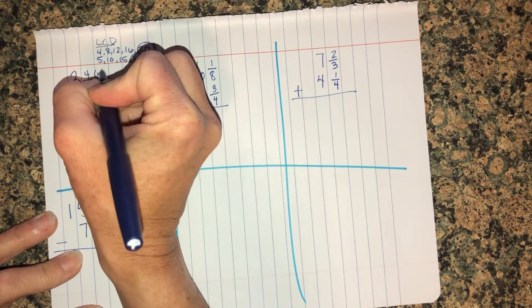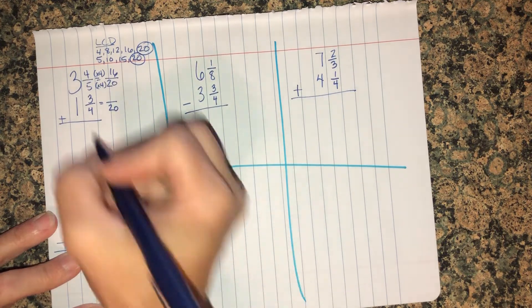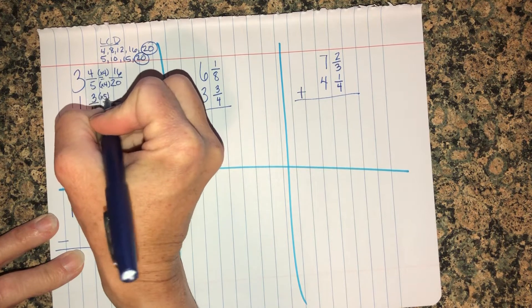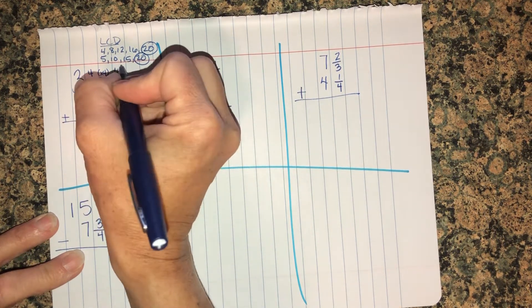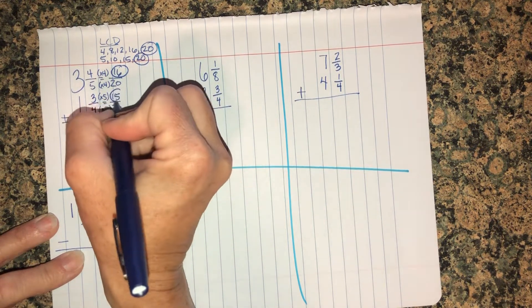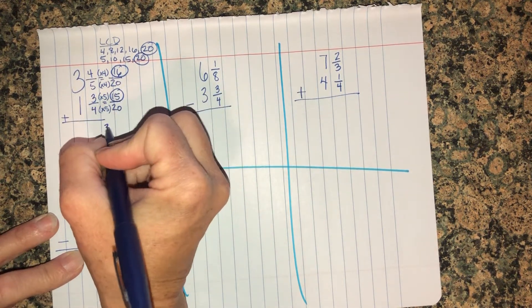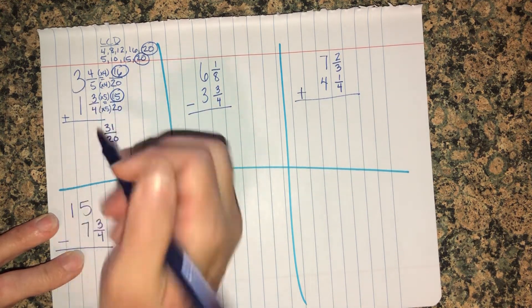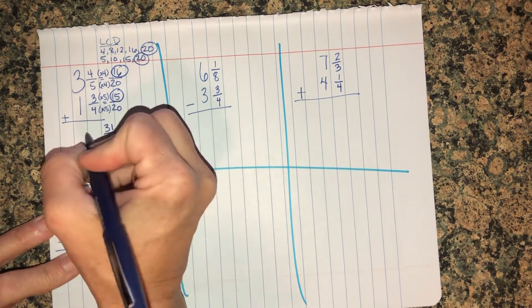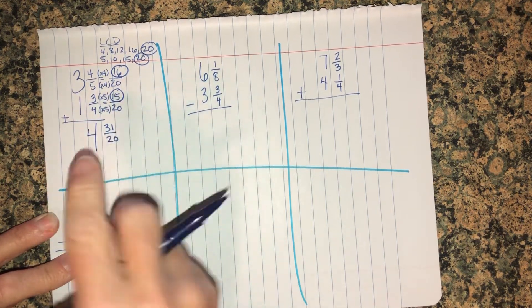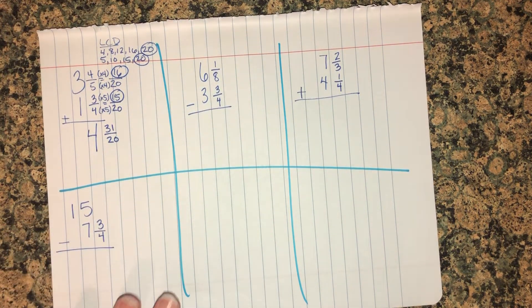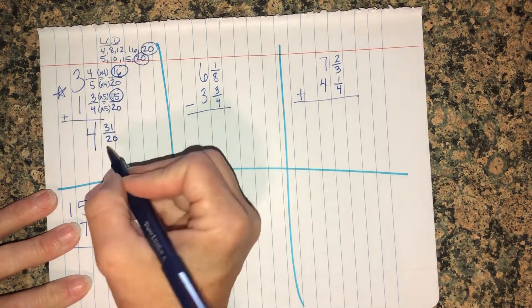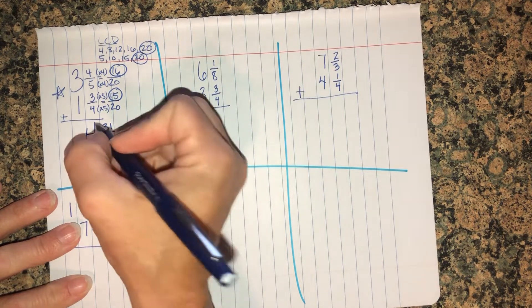This one is times four, so I'm going to have sixteen twentieths. Four times five is twenty. Three times five is fifteen. Now I'm going to add the sixteen and the fifteen. When I add them together I'm going to get thirty-one twentieths. I have had this happen over and over again: don't forget these big guys over here. Three plus one is four. If you're going to miss anything in math, let it not be that one. It's the easiest one. Don't forget the big guys over here at the side.